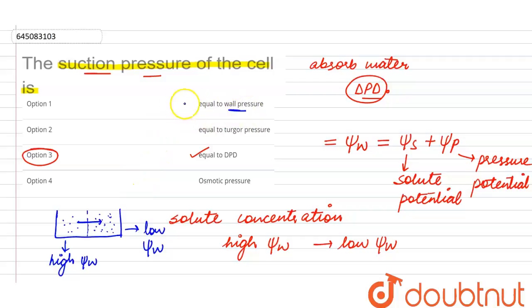Whereas it is not equal to the wall pressure, while the pressure which is equal to the wall pressure is said to be the turgor pressure. In which it says it is equal to the turgor pressure, this is also wrong.